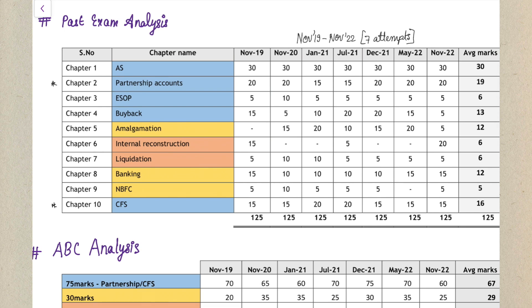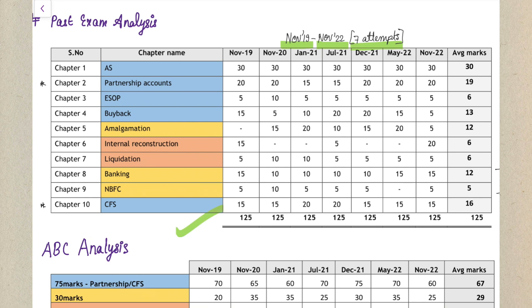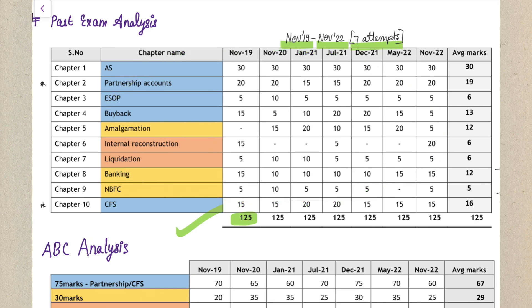I've analyzed from November 2019 till November 2022, that is seven attempts, with a chapter-wise breakup of all chapters. As you can see on the screen, every attempt has 125 marks of questions, out of which 100 marks you have to attempt. Based on this analysis, I've made categories A, B, and C - the important and not-so-important list of chapters.